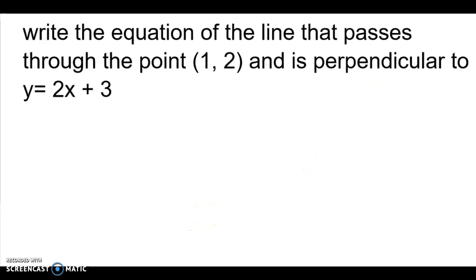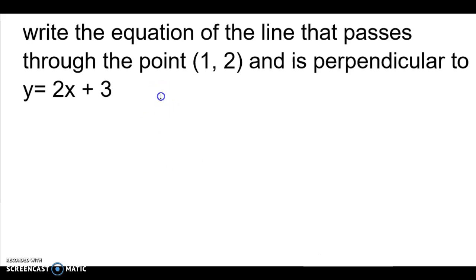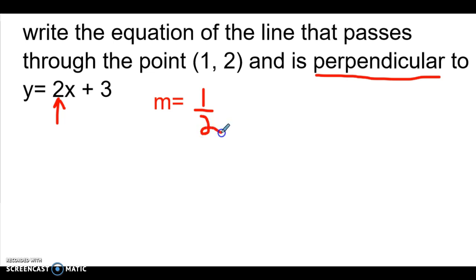Now let's try a perpendicular line. We know that we need slope and a point. We have our point — it's given to us: (1, 2). Now we need a slope. We're going to look at the line that's given to us and find the slope, which is right in front of x. The slope is two, but since we're talking about perpendicular, we're going to flip it to one half and give it a negative — the negative reciprocal — so our slope is negative one half.